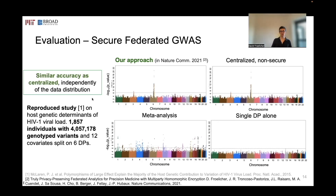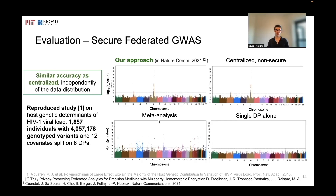We have also shown that our solution works on larger-scale examples by reproducing or simulating an existing biomedical network, obtaining the same projection as a centralized solution in which all data are pooled together, with a runtime that remains very practical. For the full GWAS, our solution obtains the same result as a centralized non-secure solution — reproducing an existing study looking at the link between HIV and genomic positions — identifying the same positions, which is not the case with meta-analysis or with a single data provider using only its subset of data.